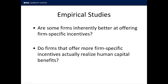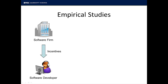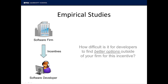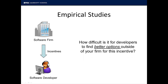Given the theoretical potential described, we may wonder whether some firms are inherently better at offering firm-specific incentives, and whether firms that offer firm-specific incentives actually realize any human capital benefits. These are the two questions I explored empirically. I focused on incentives for software developers because of the heavy reliance on general human capital in this labor market. I designed a survey instrument that focused on the incentives available to software developers and for each incentive essentially asked: how difficult is it for software developers to find better options outside of your firm for this incentive? I used these survey responses to create a firm-level measure of the extent to which the incentives in that firm's bundle are highly firm specific.